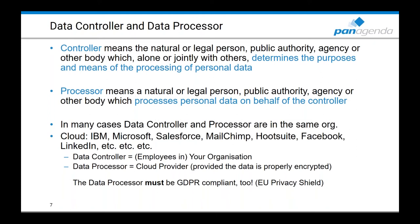This distinction becomes much more important when looking at cloud services. In a cloud situation, the data controller is your organization, because you determine the purpose and means of processing. The processor is essentially the cloud provider — but only if the data is properly encrypted in that service. For example, if you move to IBM Cloud or Microsoft Cloud and nobody at Microsoft or IBM can ever read the emails or data because it's encrypted and only you have the key, then Microsoft or IBM would be the data processor. If the data is readable by those cloud providers, even in part, they also take on the role of data controller.